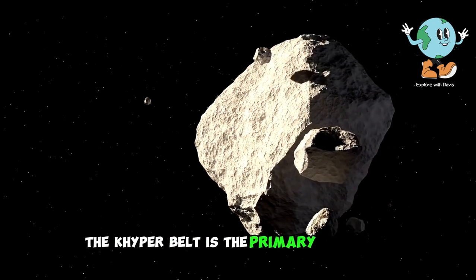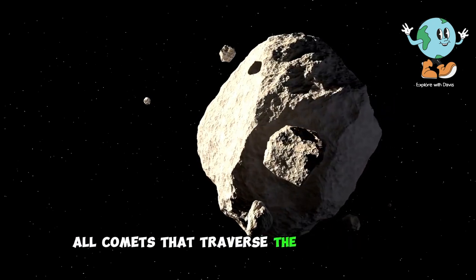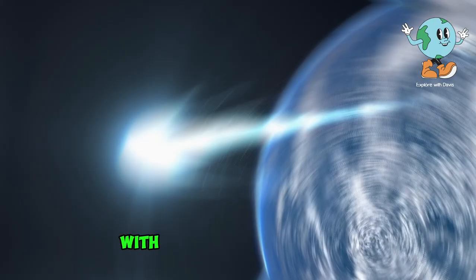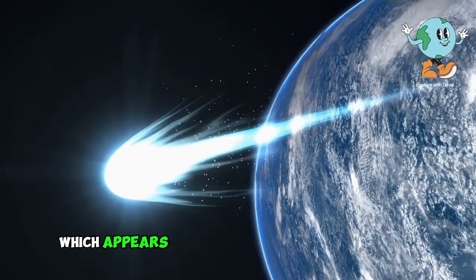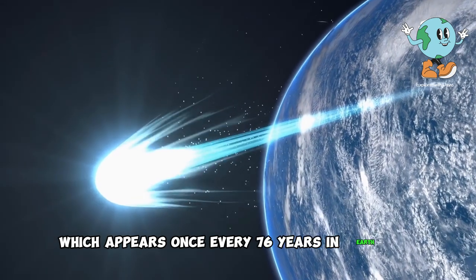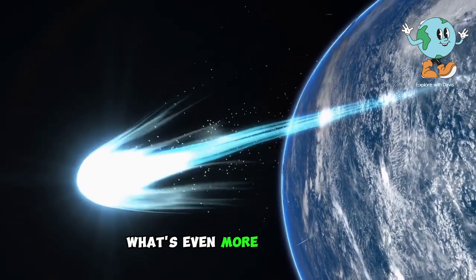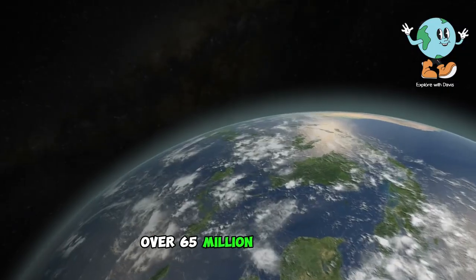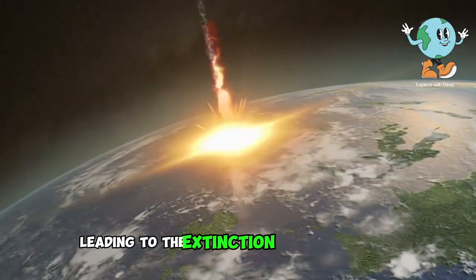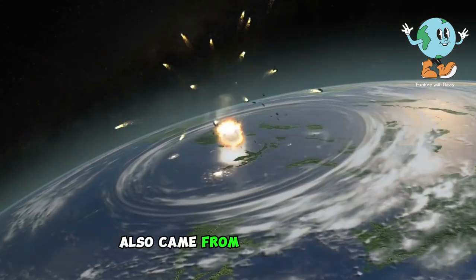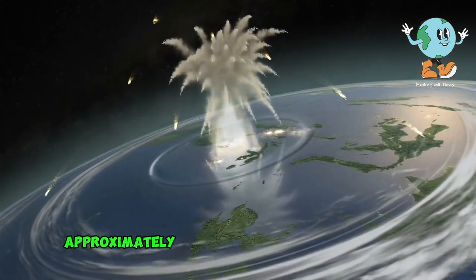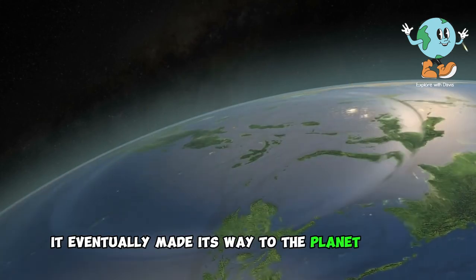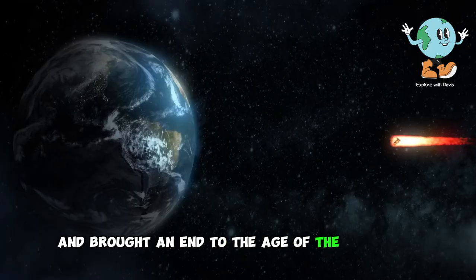In general, the Kuiper Belt is the primary source of all comets that traverse the solar system. Countless rocks and giant comets are propelled from this region, with the famous Halley's Comet, which appears once every 76 years in Earth's sky, originating from the Kuiper Belt. What's even more fascinating is that the meteorite that struck the Earth with such force over 65 million years ago, leading to the extinction of the dinosaurs, also came from the Kuiper Belt. Although its journey took approximately 5 million years to reach Earth, it eventually made its way to the planet's surface and brought an end to the age of the dinosaurs.